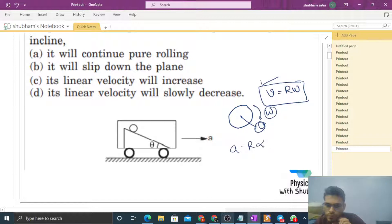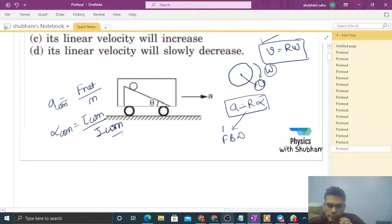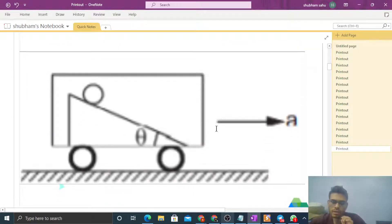This equation we satisfy through the free body diagram. Because acceleration, when you will draw the free body diagram, then you will write acceleration as net force upon mass—that is the acceleration of center of mass. And alpha, looking at alpha about center of mass, that will be net torque about center of mass divided by moment of inertia about center of mass. So first we draw the free body diagram and check this equation's validity.